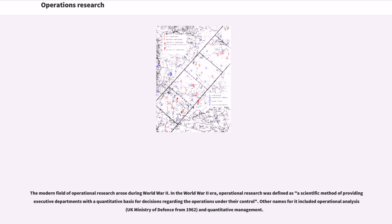In the World War II era, operational research was defined as a scientific method of providing executive departments with a quantitative basis for decisions regarding the operations under their control. Other names for it included operational analysis and quantitative management.